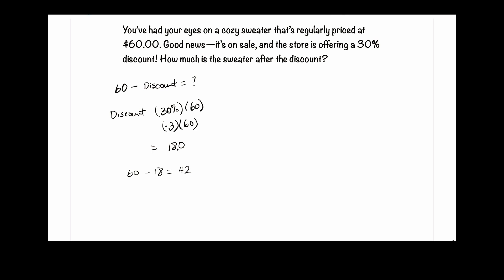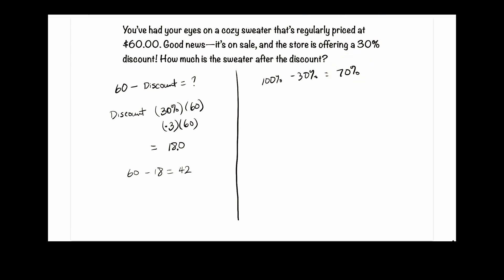Here's another way to do this, and it might actually be easier. We take 100% minus 30%, which gives us 70%. Seventy percent of the original price is what we will be paying, so we're going to take 70% times the original price.